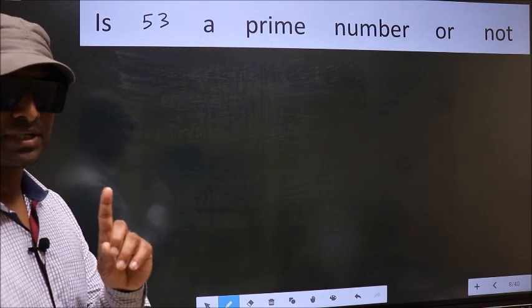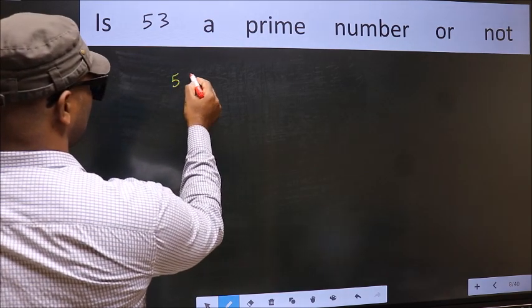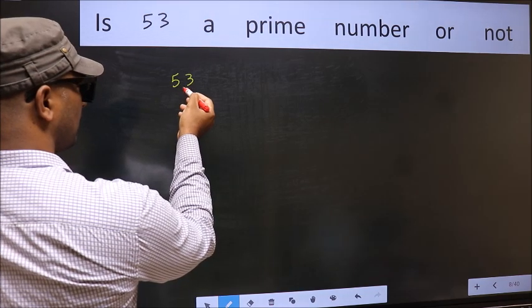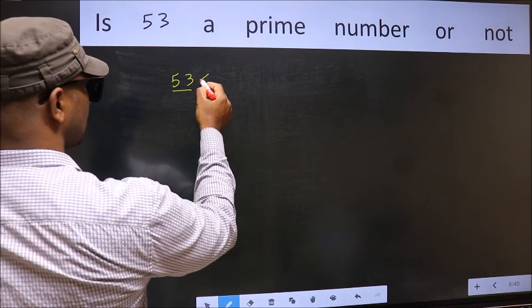For that, step 1. Given number is 53. You should write a number, perfect square number, close to this number, which is 64.